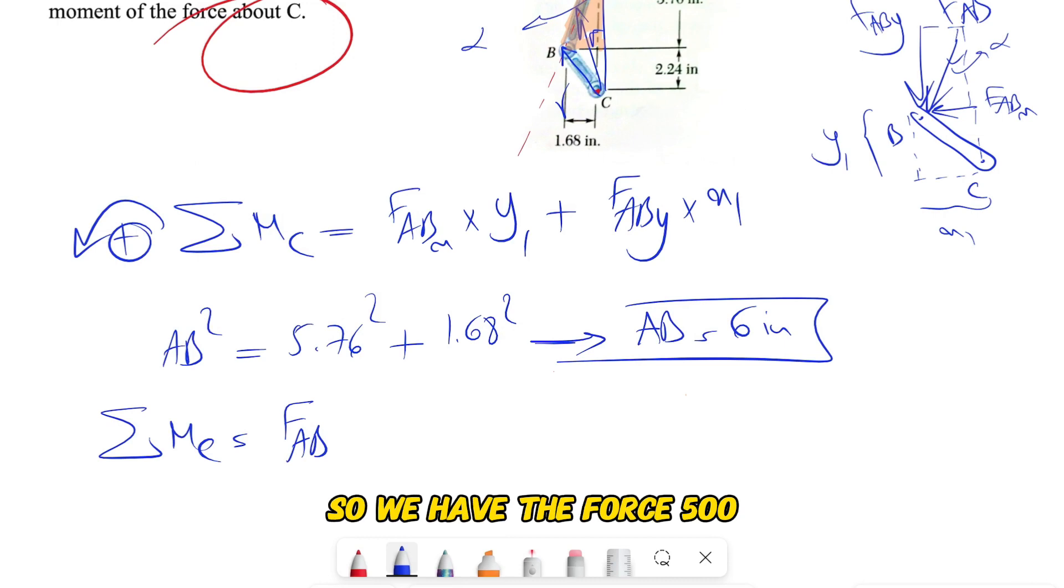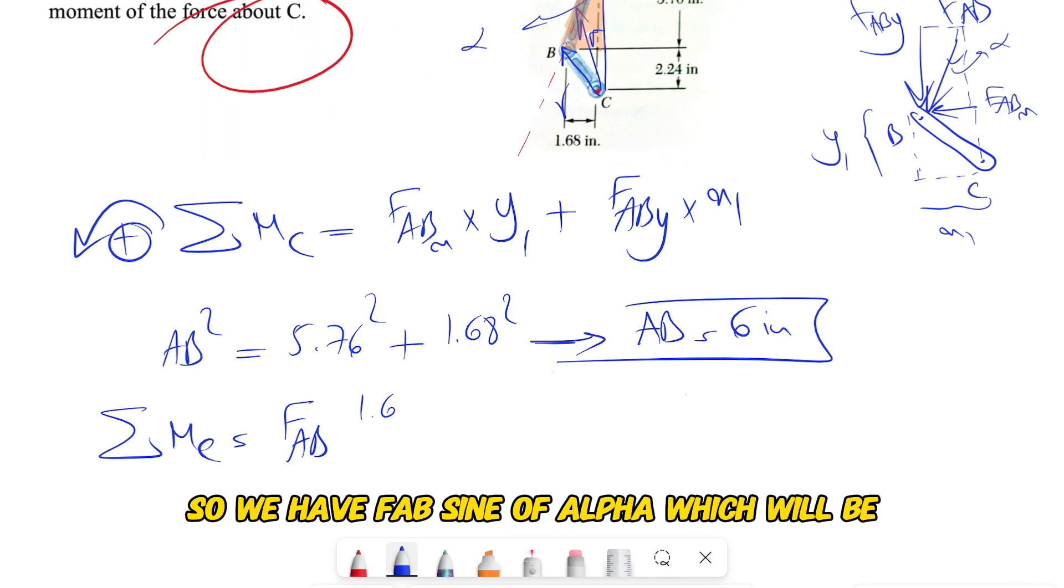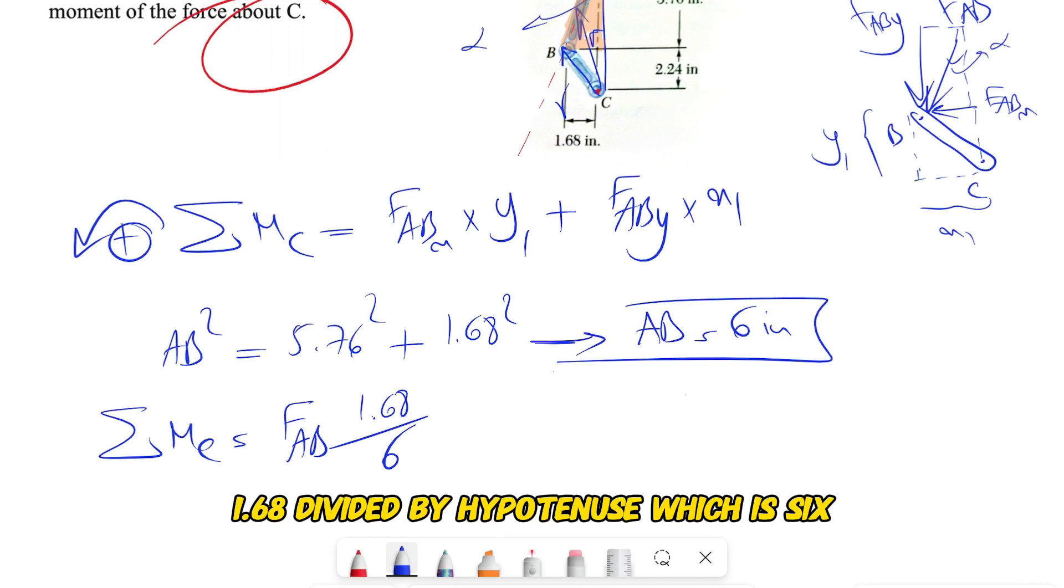So we have the force 500, so we have FAB sine of alpha, which will be 1.68 divided by the hypotenuse, which is 6.